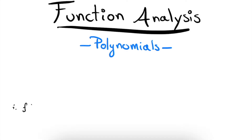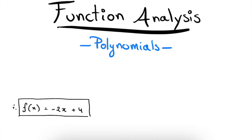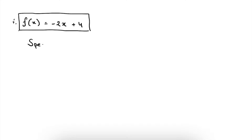The first exercise we'll consider this function: f of x is minus 2 times x plus 4. Now we see that this function is a linear function, and we know from linear functions that they are graphically represented by a straight line. So we already have a rough idea what the end result should look like.